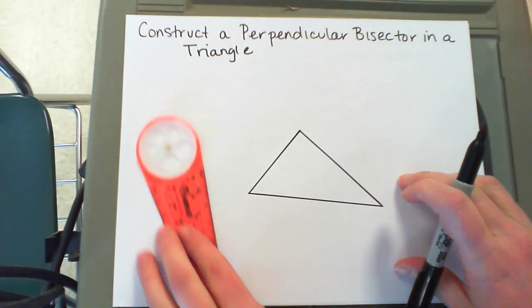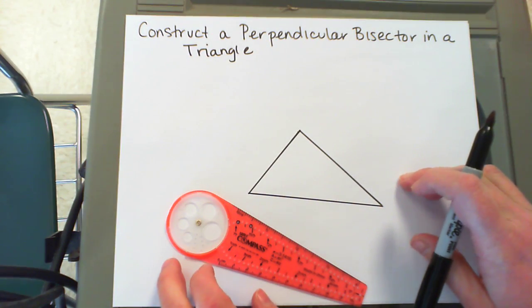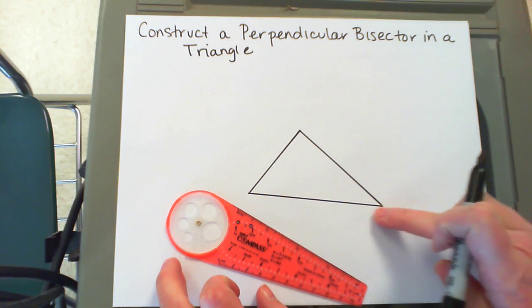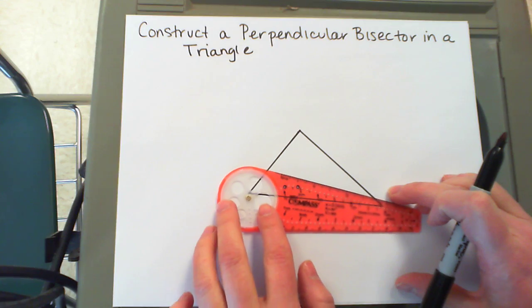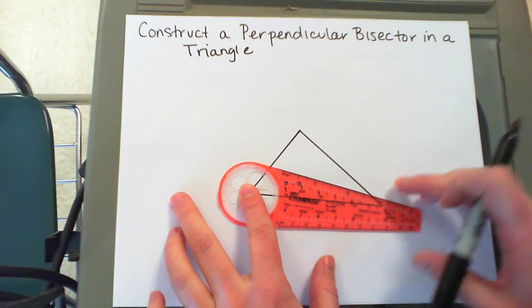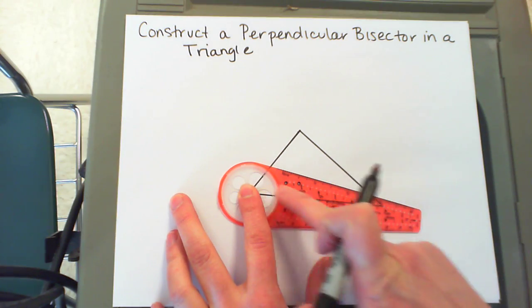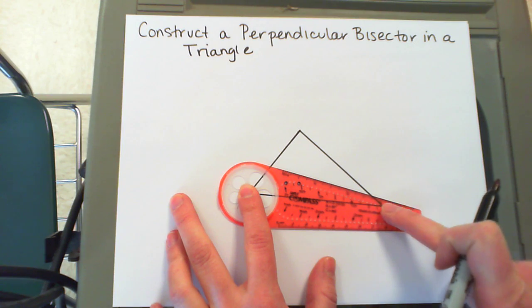To construct a perpendicular bisector, which cuts one side in half, I'm going to start with this bottom side. You're going to place your compass on the vertex and choose an arc that's visibly more than halfway across.